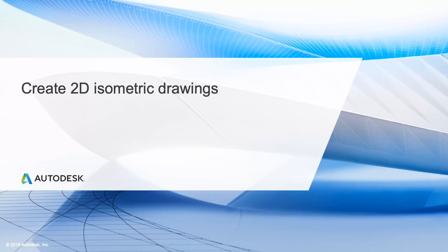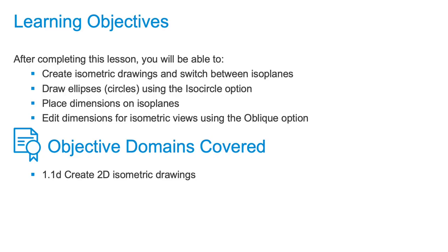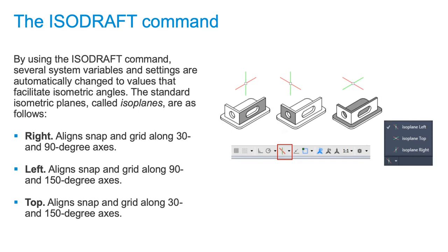We're going to be learning how to create 2D isometric views for drawings. You're going to learn how to switch between isoplanes. We use isoplanes to create the different sides of our isometric view, and we use ellipses to create isocircles that represent the holes in our isometric view. We'll also be modifying dimensions on our isometric views so that they align with the isoplanes. Using isoplanes and isometric tools is one of the easiest ways to create a 3D representation without actually having to move into 3D.